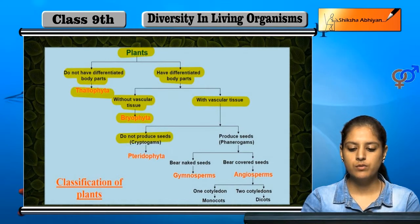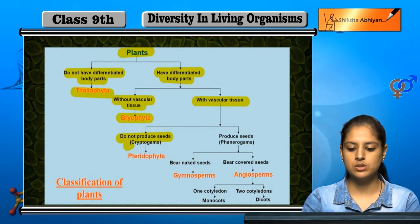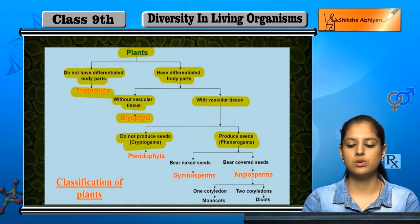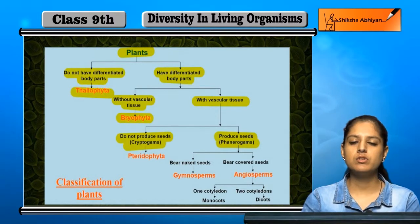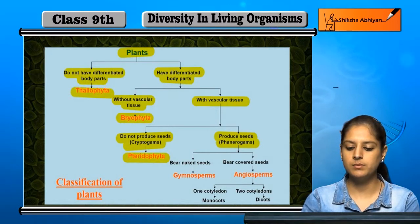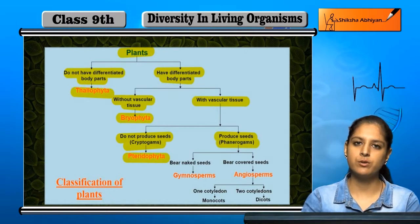If they don't produce seeds, they are called cryptogams. If they can produce seeds, they are classified further. If they do not produce seeds, they are Pteridophyta.